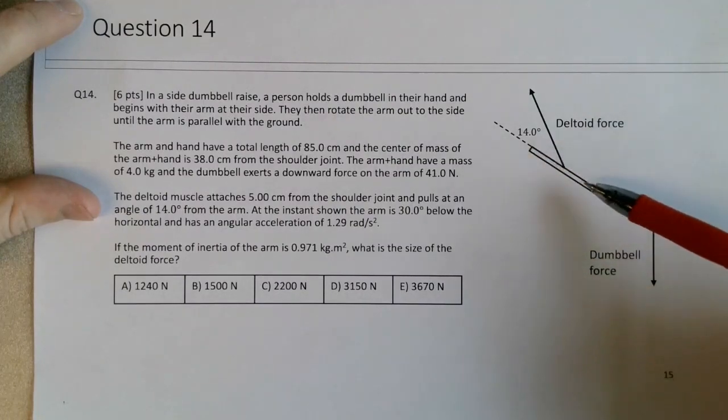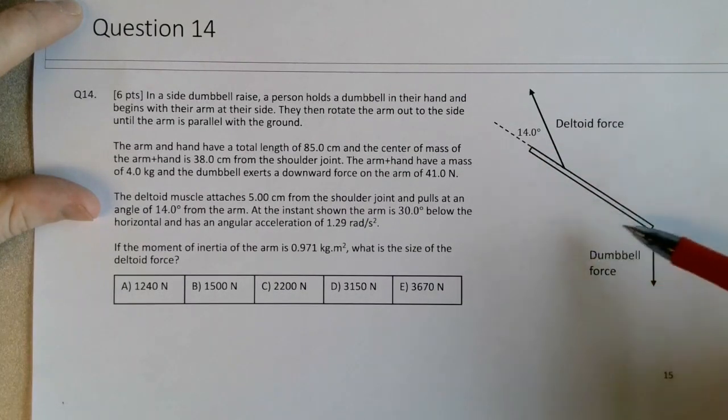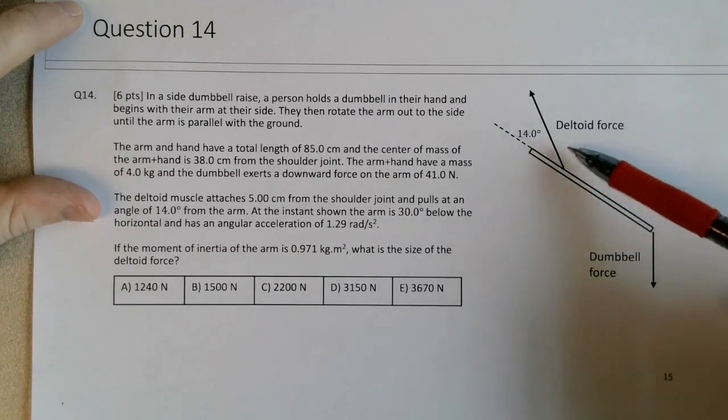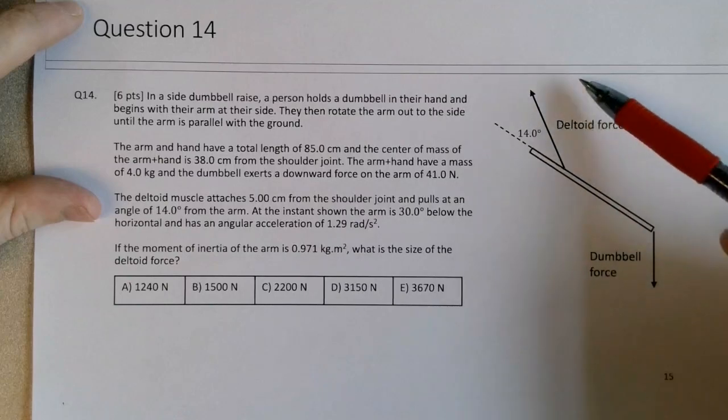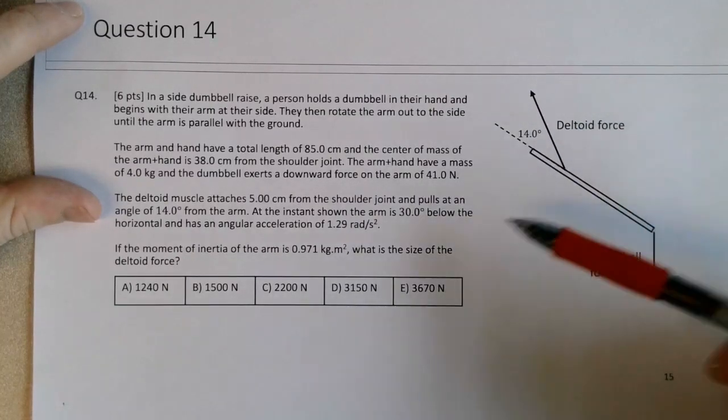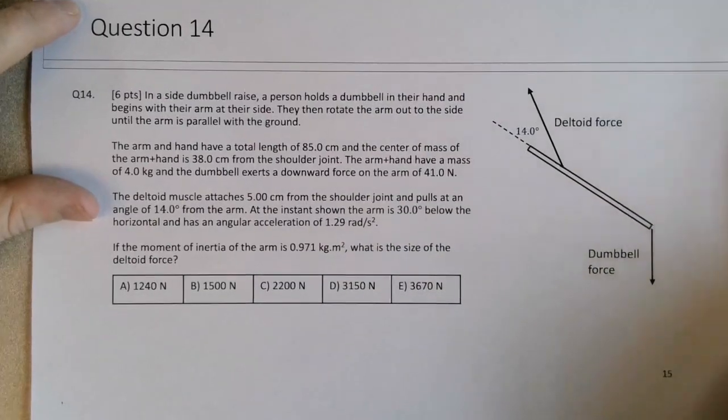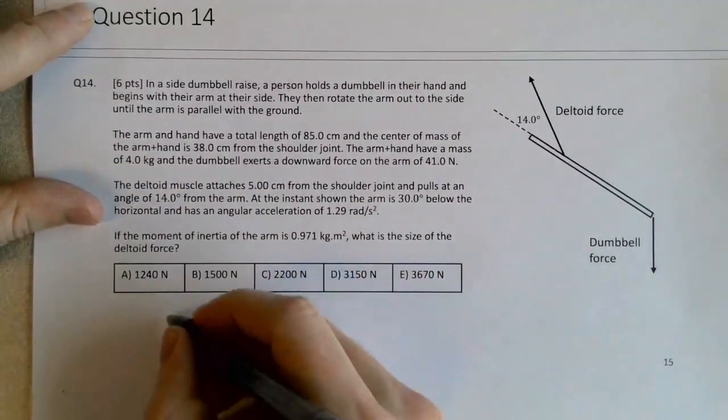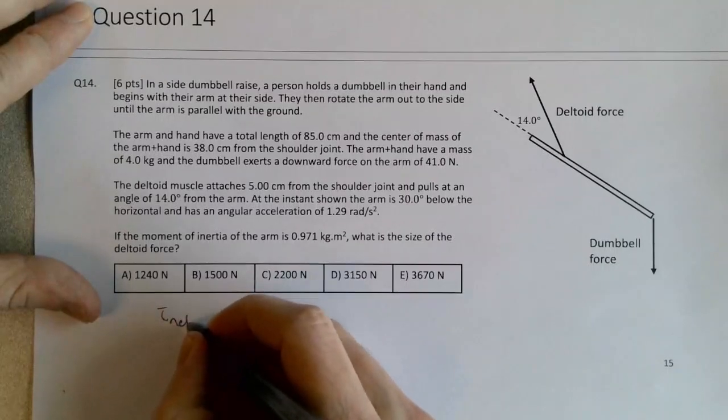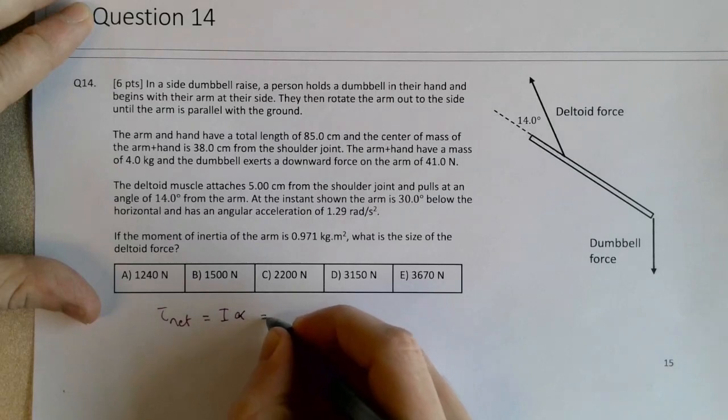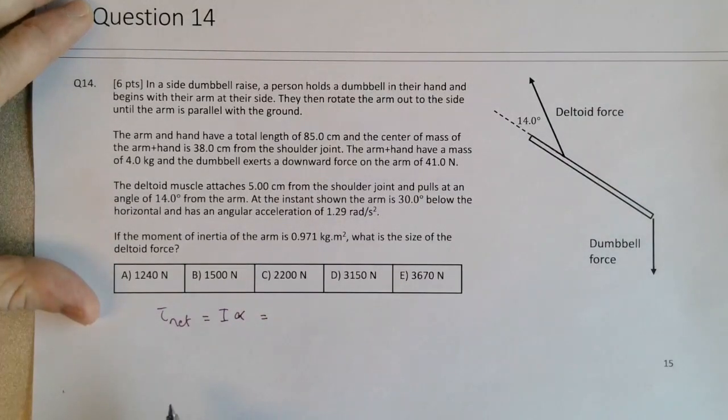There's a deltoid force, there's a weight force by the arm itself, and another force by the dumbbell. The deltoid has a counterclockwise torque, the dumbbell force and the weight force have clockwise torques, but there is a net torque on the arm. I'll use this page to go ahead and solve for that. We know that the net torque is I times alpha. We're given both of these particular terms in this question.